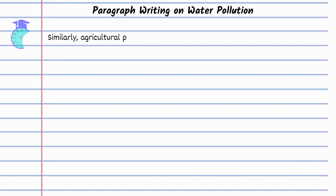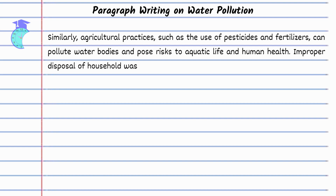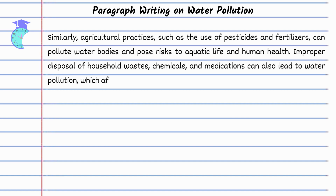Similarly, agricultural practices such as the use of pesticides and fertilizers can pollute water bodies and pose risks to aquatic life and human health. Improper disposal of household wastes, chemicals, and medications can also lead to water pollution, which affects the quality of drinking water.